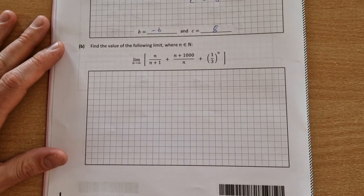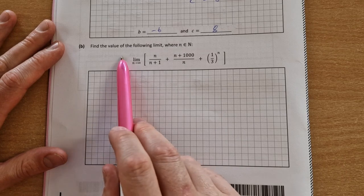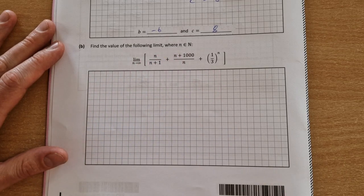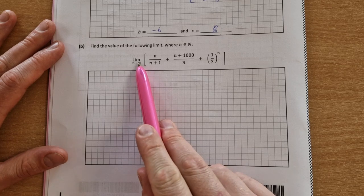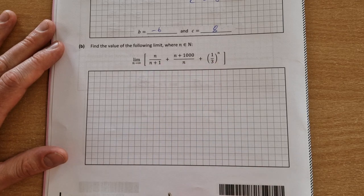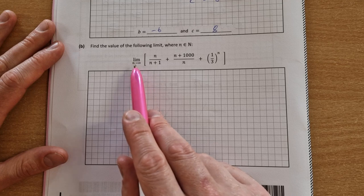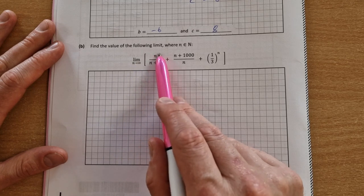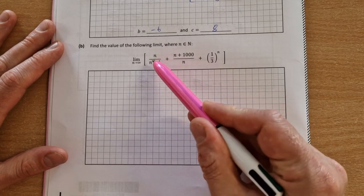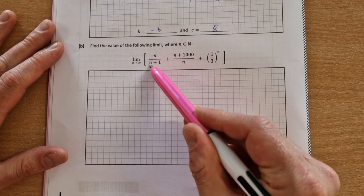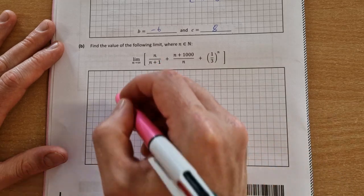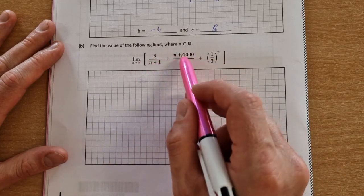For part (b) then we have a limits question. Find the value of the following limit where n is an element of N. To do this we take the limit of each one individually. When we take this limit what we do is divide each term by the highest value of n that is within it. So that would be n in this case.